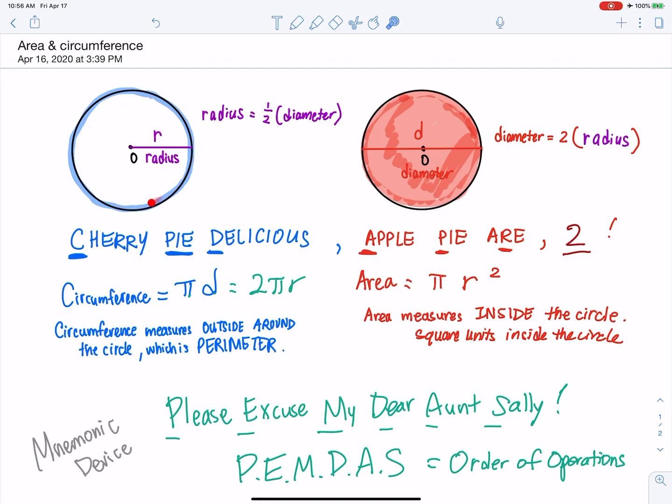Circumference measures outside around the circle. That's perimeter. Area measures inside the circle. How many square units fit inside there?